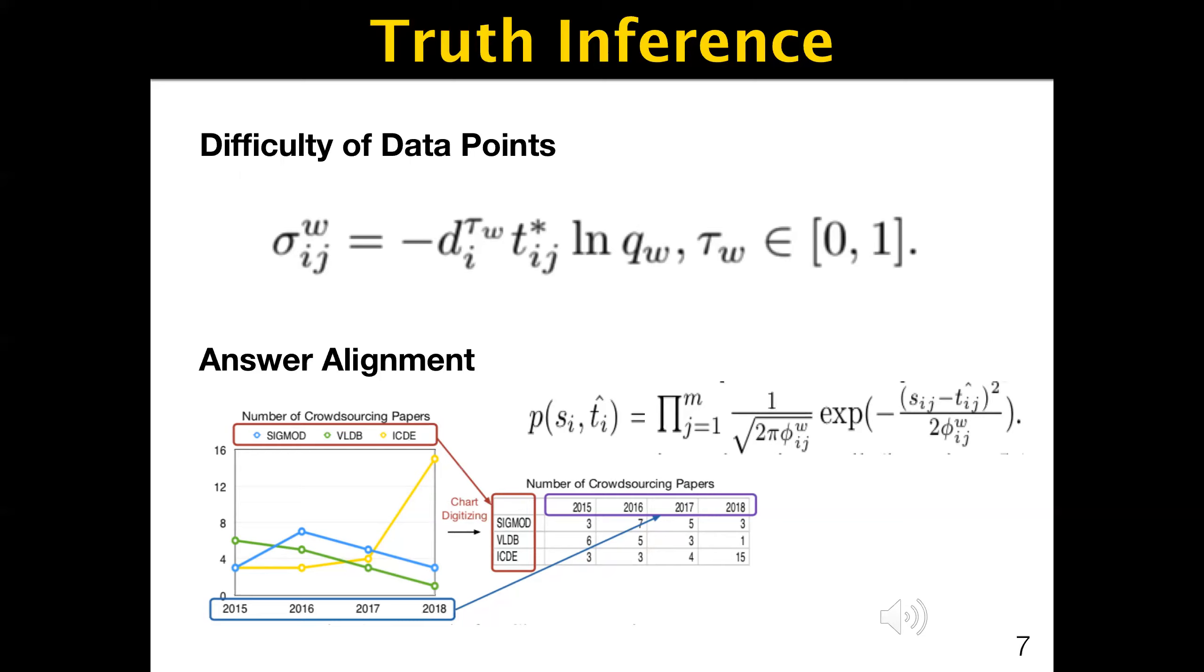This phenomenon cannot be ignored because it will influence both the worker's quality and the inferred truth. For example, if misaligned answers are directly used to compute the ground truth, we will derive a truth with high bias, which results in the worker who answers the task being estimated as a low-quality worker. To this end, we propose a probability-based solution to align the answers.